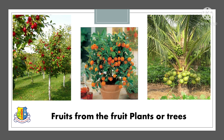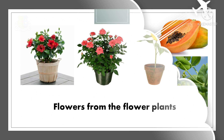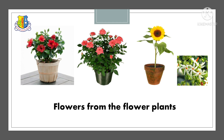Fruits — we can get fruits from the fruit plants or trees. Examples: apple, orange, and coconut. Seeds — we can get seeds from the fruits and flowers. Example: sunflower gives us seeds.